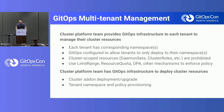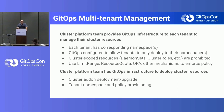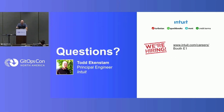Quickly on GitOps multi-tenant management: at Intuit, our cluster platform team provides GitOps infrastructure to each tenant, and each tenant has one or more namespaces they're allowed to deploy into. GitOps is configured to only allow those tenants to deploy to their namespaces. We've specifically prohibited cluster-scoped resources such as daemon sets and cluster roles. We also use LimitRange, ResourceQuota, OPA, and other mechanisms to enforce policy, and you want to limit that access in the GitOps infrastructure. The platform team itself uses a separate set of GitOps infrastructure with elevated privileges to deploy cluster-scoped add-ons, manage tenant namespaces, and do policy provisioning.